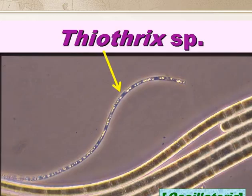This is a photomicrograph of Thiothrix, a purple sulphur bacterium, and you can clearly see the sulphur granules inside its cell.